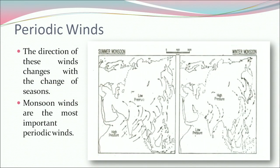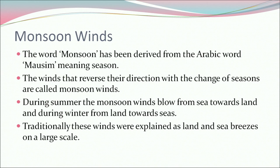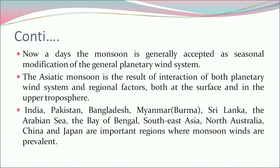Now, what are periodic winds? The direction of these winds changes with the change of season. Monsoon winds are the most important periodic winds. The word monsoon has been derived from the Arabic word 'mausam' meaning season. The winds that reverse direction with the change of seasons are called monsoon winds. During summer, the monsoon winds blow from sea towards land, and during winter from land towards seas. Traditionally these winds are explained as land and sea breezes on a large scale. Nowadays the monsoon is generally accepted as a seasonal modification of the general planetary wind system.